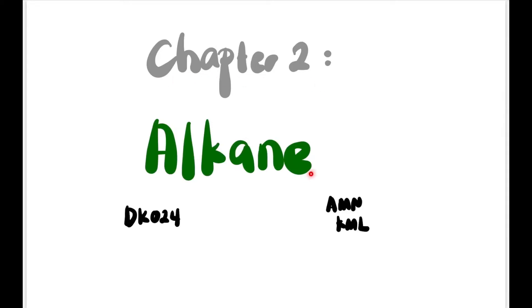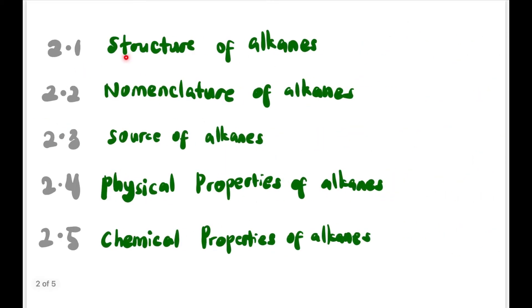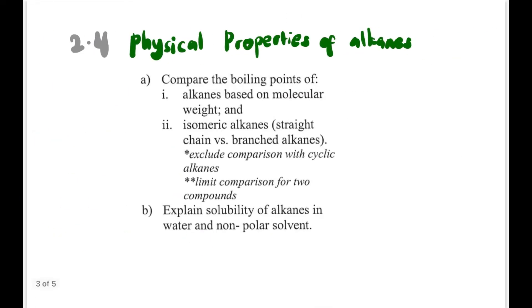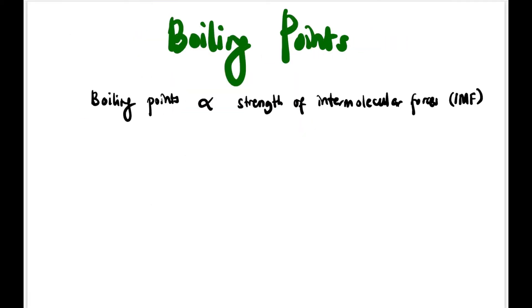Hi guys, welcome back to the channel. Still in chapter 2 on alkanes, we have learned sections 2.1 until 2.3. Now we're going to focus on 2.4, physical properties of alkanes. At the end of this lesson, you should be able to compare the boiling points of alkanes based on molecular weight and isomeric alkanes - straight versus branched alkanes - and also explain the solubility of alkanes in water and non-polar solvents.